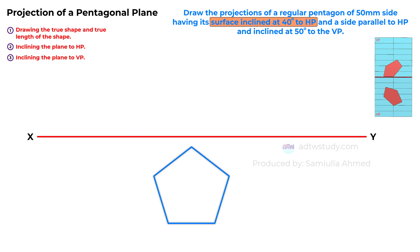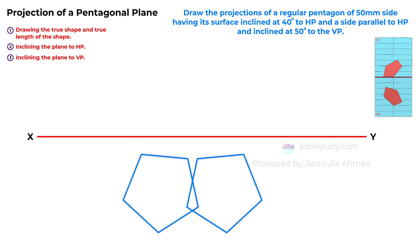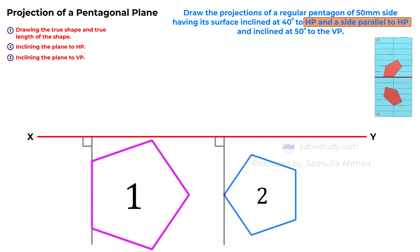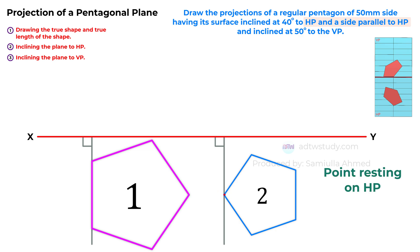Once we've established where to draw the pentagon, the next consideration is its orientation. There are two possible orientations: one with a side perpendicular to the reference line, or with a corner at a line perpendicular to the reference line. Examining the question, we note the mention of a side parallel to the HP, which indicates that we should draw the pentagon in this orientation. If the scenario had described a point resting on the HP, we would have drawn the pentagon in the other orientation.